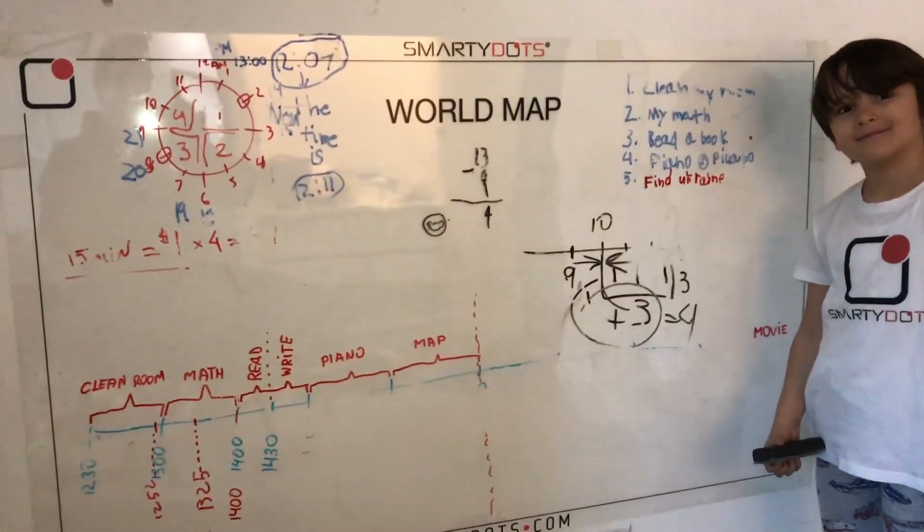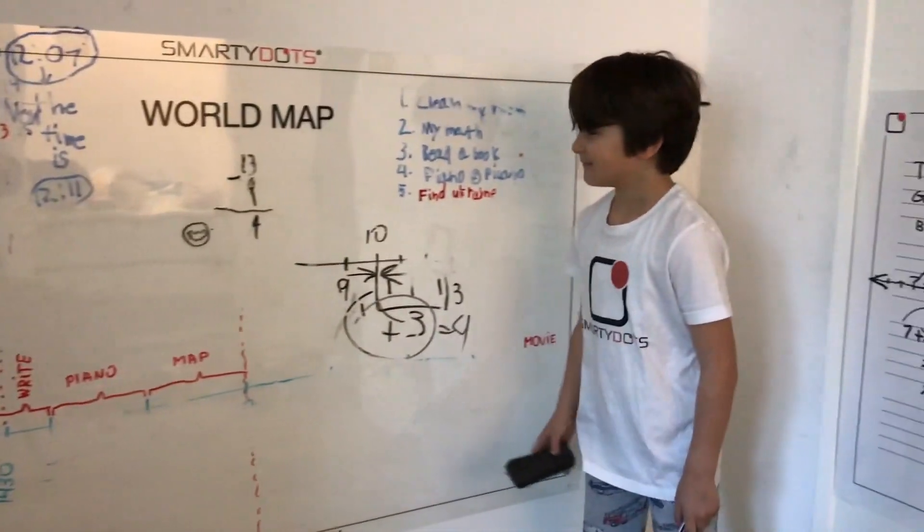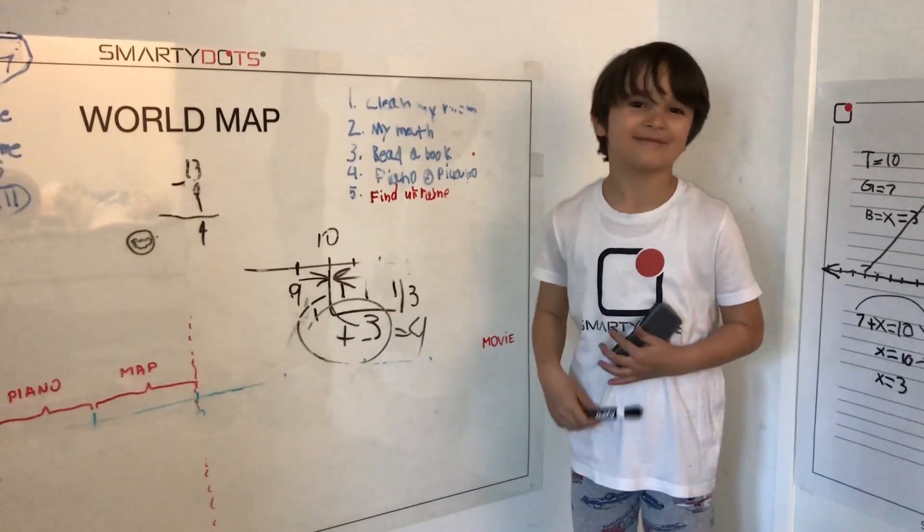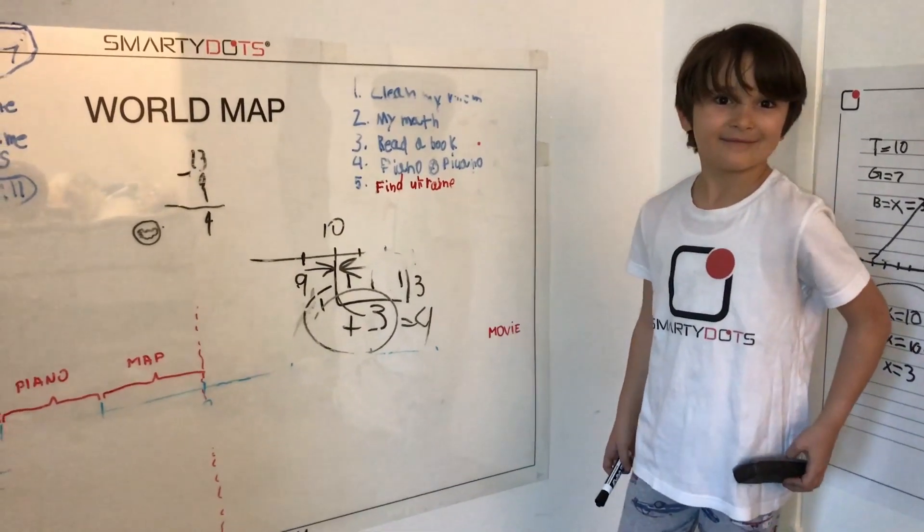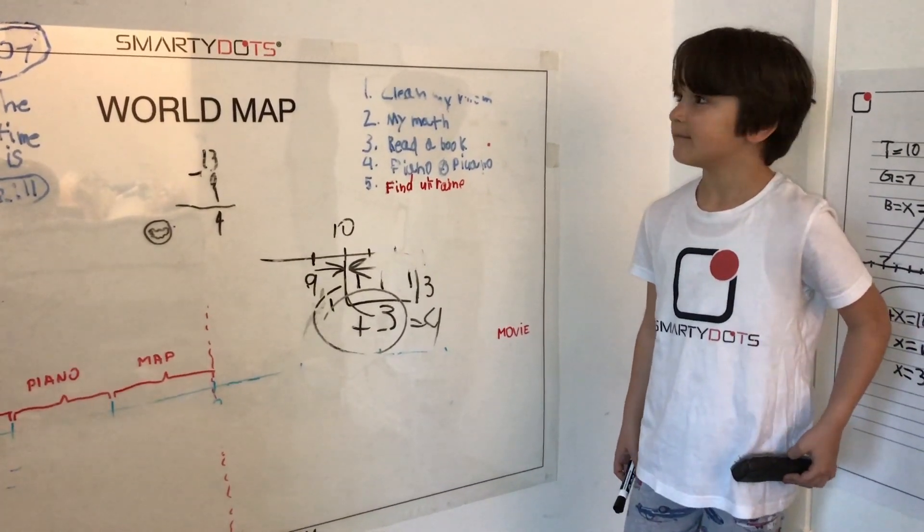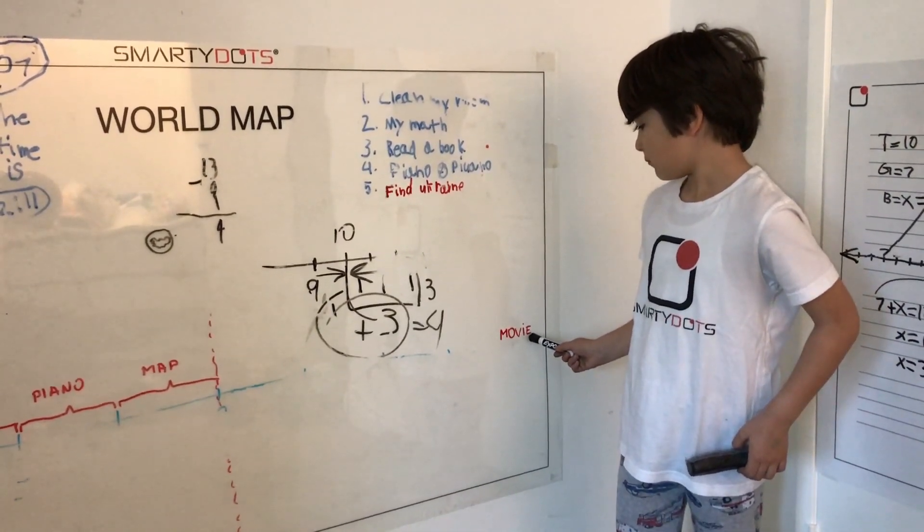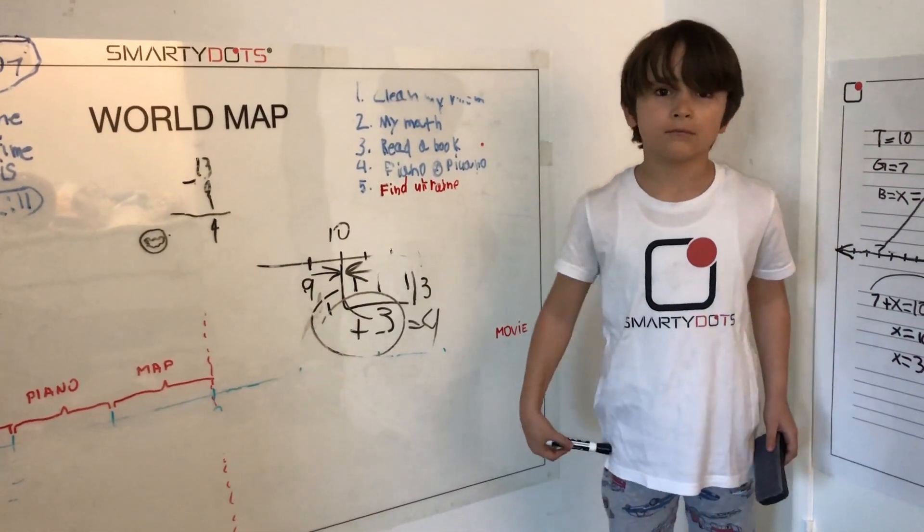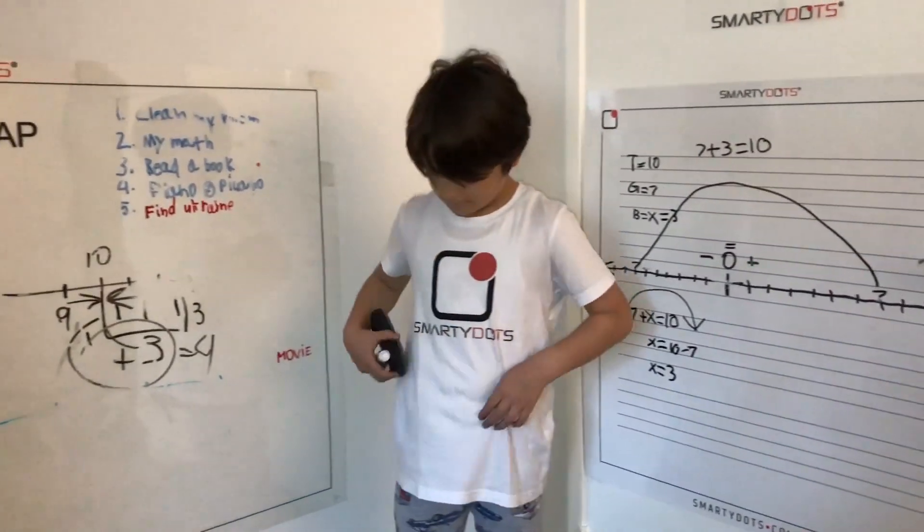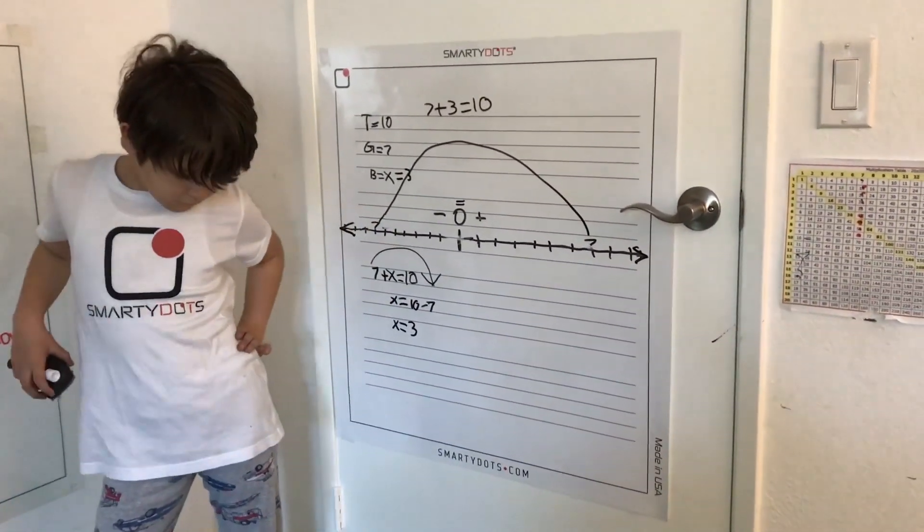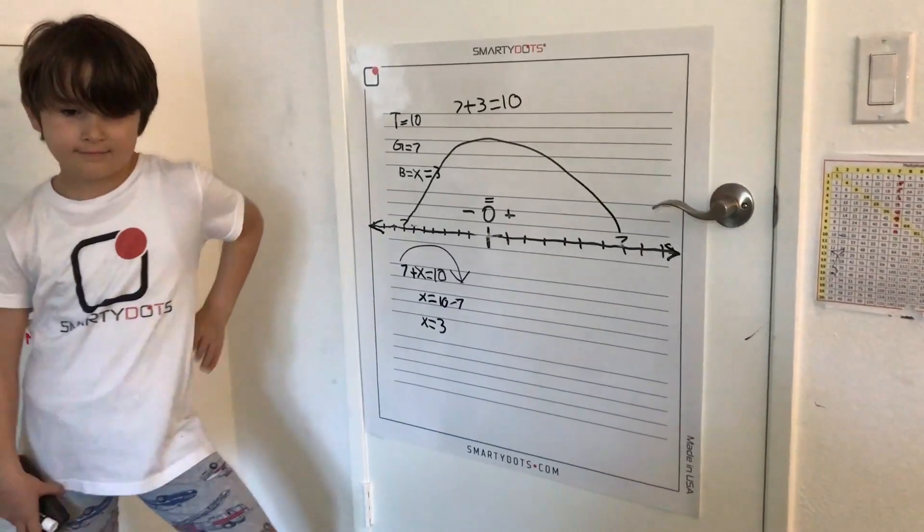And because everything else is sold out. If you want to get Smarty Dots 2.0, these guys right here, the ones that are transparent and glueless, then the product is going to be available, I believe, by the end of April or sometime mid-April. We're starting a new production right now. So, your Smarty Dots 1.0 are under Hot Deals of the menu.